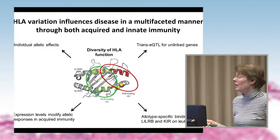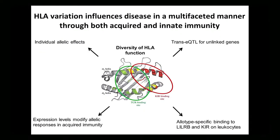HLA variation, we think of it as being really important in antigen presentation. This is just the peptide binding groove of a class 1 molecule with a peptide sitting in the groove. And we know that a lot of the effects that we see when we look at disease actually are due to the types of peptides that sit in the groove, and the ability of individuals with specific alleles to respond appropriately to a given pathogen, for example.